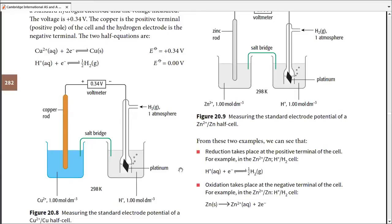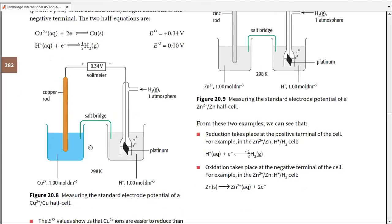The salt bridge usually consists of an immovable gel containing a salt such as potassium nitrate or potassium chloride. Now, to determine which electrode becomes the cathode and which becomes the anode — which undergoes reduction and which undergoes oxidation — we can refer to the reactivity series studied in IGCSE. Anything above hydrogen in that series tends to become the anode, while hydrogen becomes the cathode.